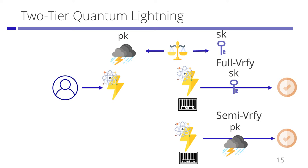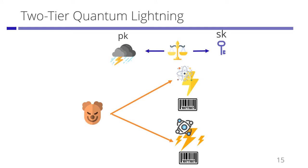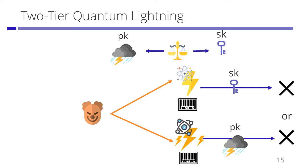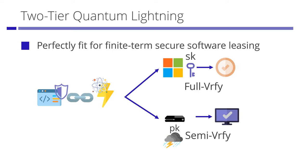In the security game, the adversary generates potentially entangled two quantum states as in quantum lightning. In the two-tier unclonability game, one quantum state is checked by full verification using the secret key, and the other quantum state is checked by semi-verification using the public key. Two-tier unclonability guarantees one of the two states with the same serial number is invalid. Two-tier quantum lightning perfectly fits for finite-term Secure Software Leasing: the lessor can check a returned software by using full verification with the secret key, while the lessee can check the leased software by using semi-verification with the public key.